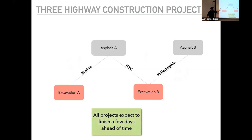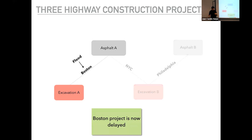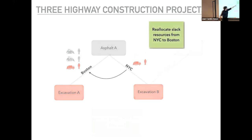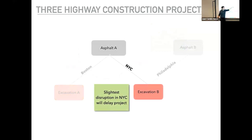Theoretically, all projects when they begin expect to finish ahead of time — they're allocated a cushion because they know disruptions will occur. Now if there is a flood in Boston that depletes all of the project's slack time and puts it into delay, what this firm will do is move some machinery and resources — at least temporarily — to bring that project back on time and avoid paying a penalty. So it reallocates its slack resources from New York City to Boston.